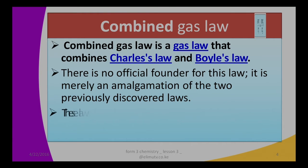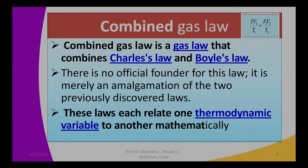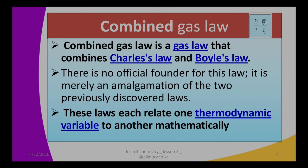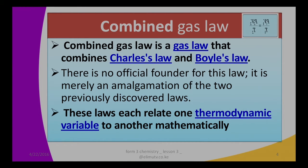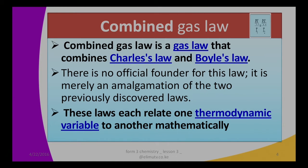These laws each relate one thermodynamic variable to another mathematically. We are talking about thermodynamic variables. The variables used in Gas Laws are three: temperature, pressure, and volume. One of the parameters is kept constant. Charles's Law and Boyle's Law relate the thermodynamic variables — temperature, volume, and pressure — mathematically.